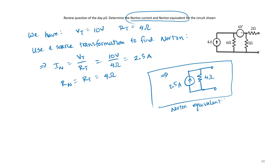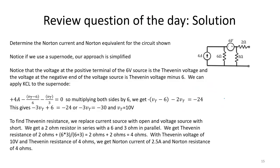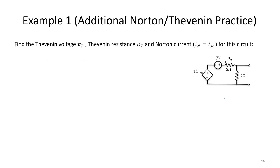You'll want to make sure you get really comfortable solving these Thevenin and Norton problems using all the other techniques we already know. If you're really comfortable with node analysis, mesh analysis, supernodes, and supermeshes, you'll find it's a lot easier to determine V_OC and the Norton and Thevenin resistance. That is our example for a circuit that does not have a dependent source. Let's now do an extra example of a circuit which does contain a dependent source.